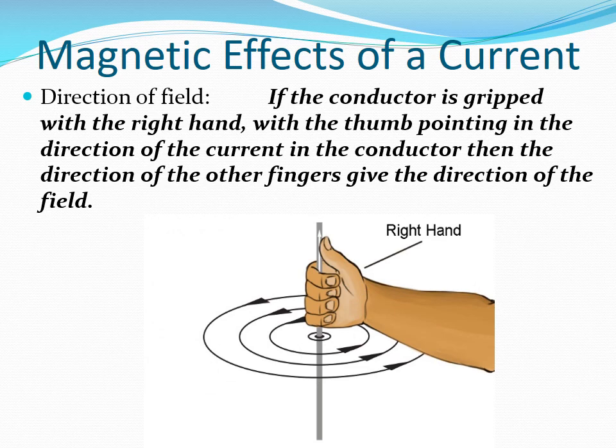The direction of the field is given by the right-hand grip rule. Using our right hand, we grip the conductor — or for safety, we pretend to be gripping the conductor using our right hand. We make the thumb point in the direction of the current in the conductor. Then, the other fingers are going to point in the direction of the magnetic field established around the conductor.